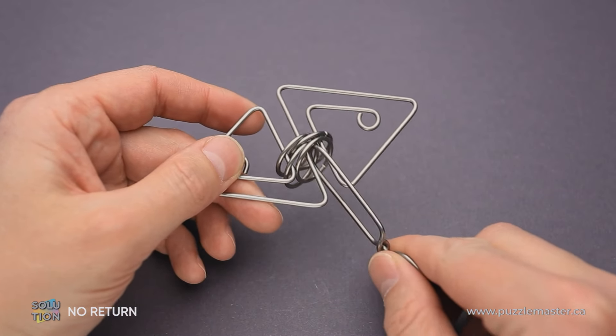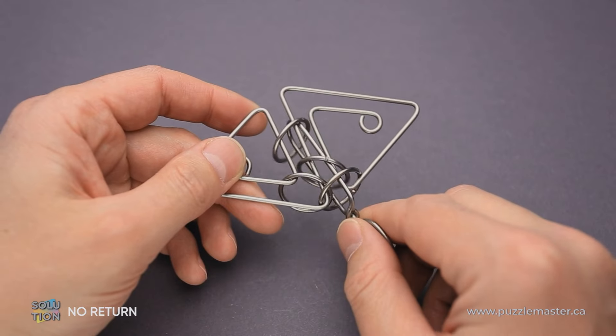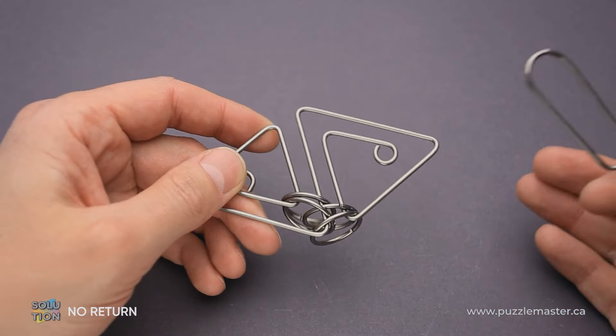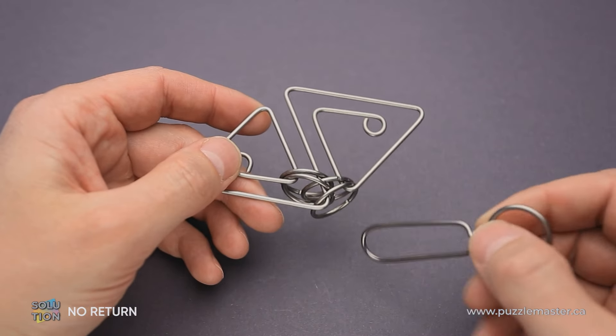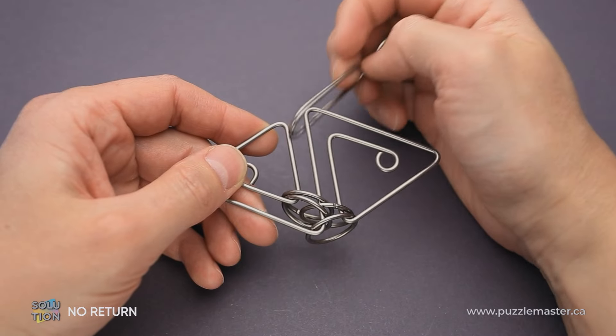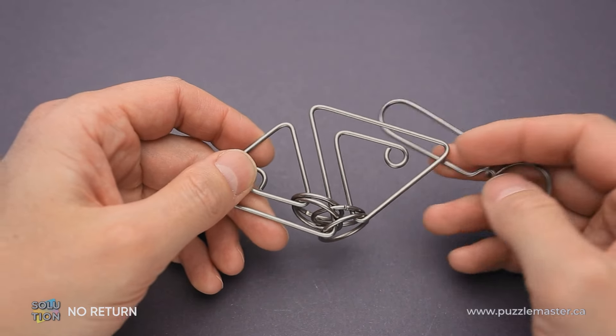That means that if you put the handle through this opening, you do some complex moves and you remove it through the same opening, that means you didn't solve the puzzle. You have to find a way how you can put it right here and remove it on this side, and only then the puzzle will be solved.